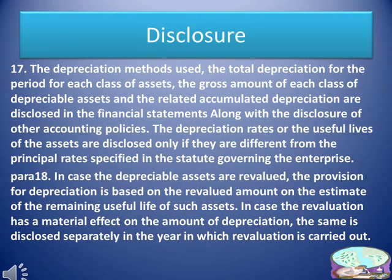Para 17. The depreciation methods used, the total depreciation for the period for each class of assets, the gross amount of each class of depreciable assets, and the related accumulated depreciation are disclosed in the financial statements along with the disclosure of other accounting policies. The depreciation rates or the useful lives of the assets are disclosed only if they are different from the principal rates specified in the statute governing the enterprise.